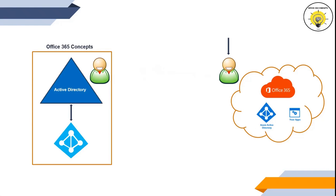When a user account is synchronized from Active Directory, we cannot modify most of the attributes from Office 365. When I say most attributes, that means we can still manage a few attributes from Office 365 using PowerShell commands — I will be discussing those attributes in a later session. One important thing to note is that this is not a cut-and-paste process; it is a copy-and-paste process. The actual account remains within Active Directory, and a replica of that account is synced to Office 365.